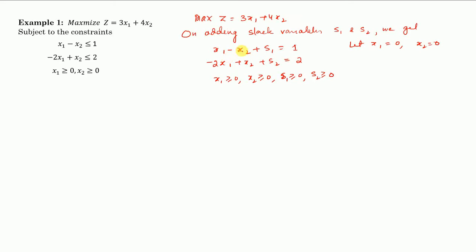So if you put x1 = 0 and x2 = 0, you will get s1 = 1 and s2 = 2. We have to check whether this is an initial basic feasible solution or not. We can check the corresponding matrix of this system of equations.